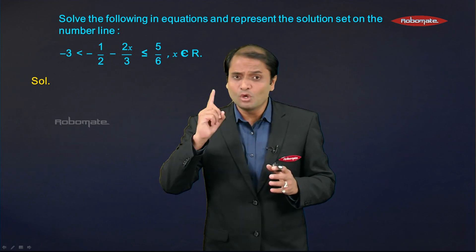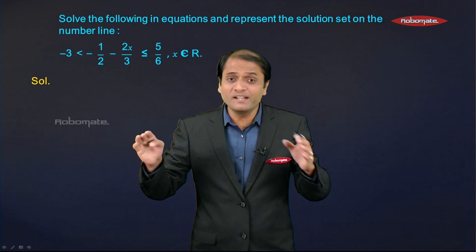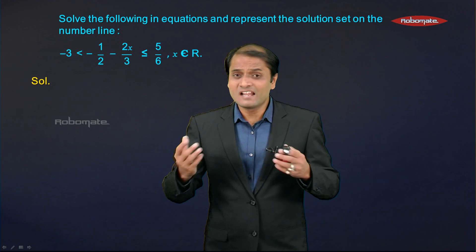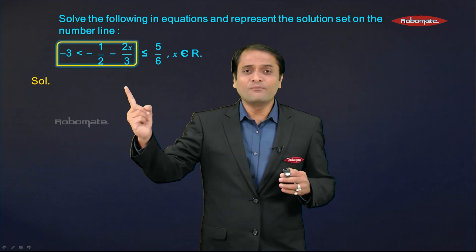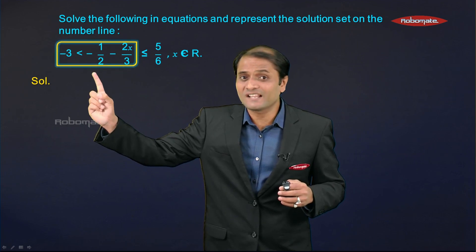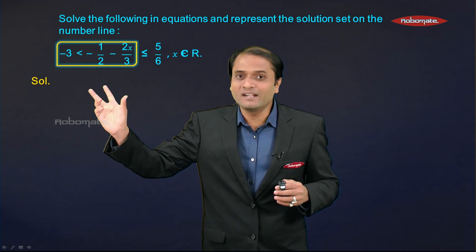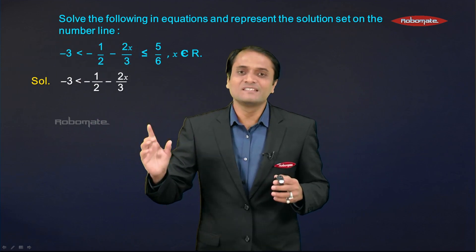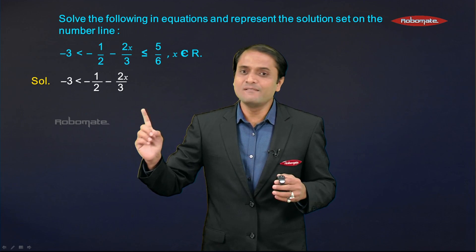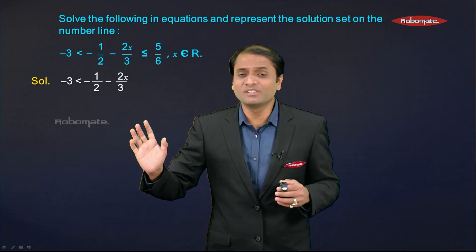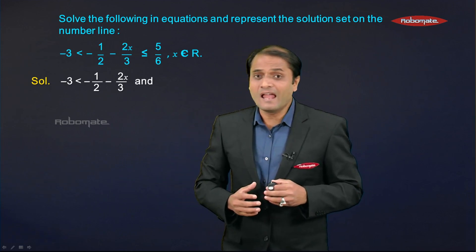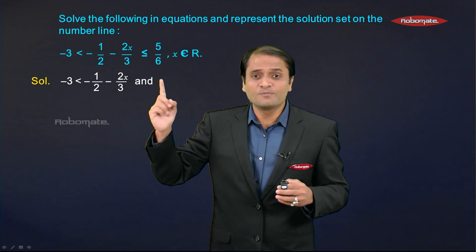To solve such an inequation, the first step is to split it into two single linear inequations. Observe the first two expressions connected by the first inequality sign, which is a less-than sign. This part gives us the first single linear inequation: −3 < −1/2 − 2x/3.